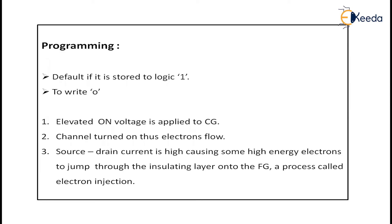See how programming works. In pseudo NOR, by default it stores the value 1. If I need to perform a write operation, I need to store a zero. For storing zero, an elevated ON voltage must be applied to the control gate — I am going to feed a large amount of voltage to my control gate.